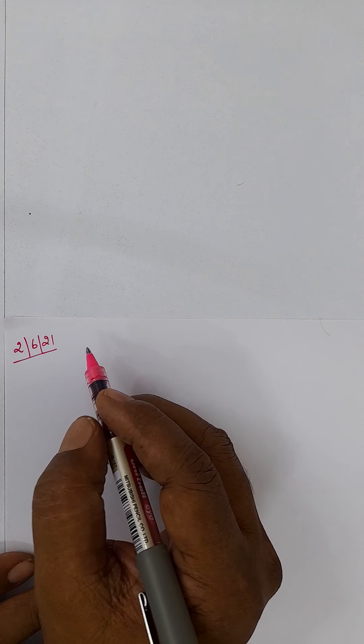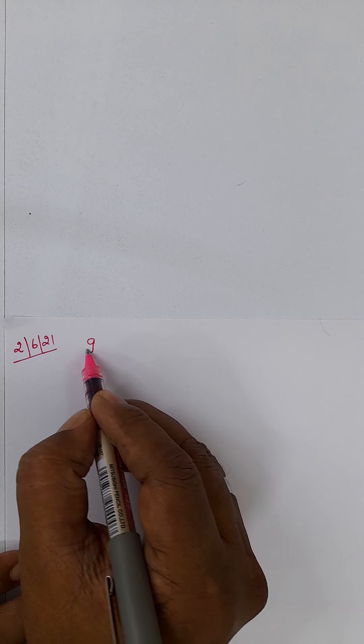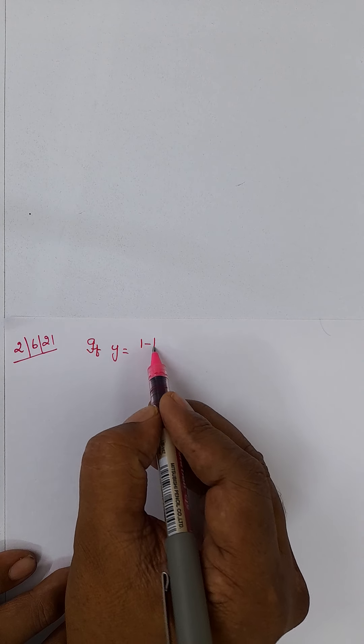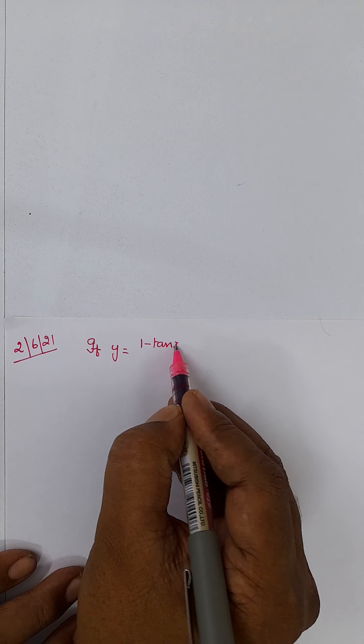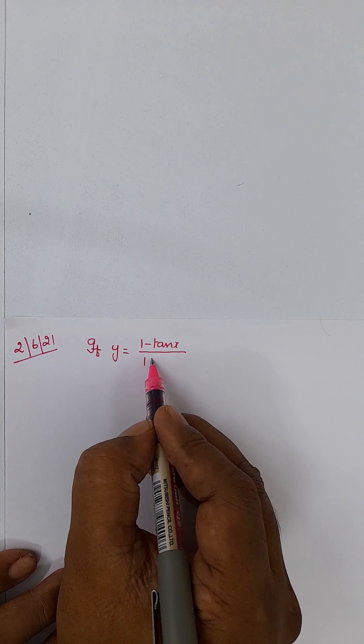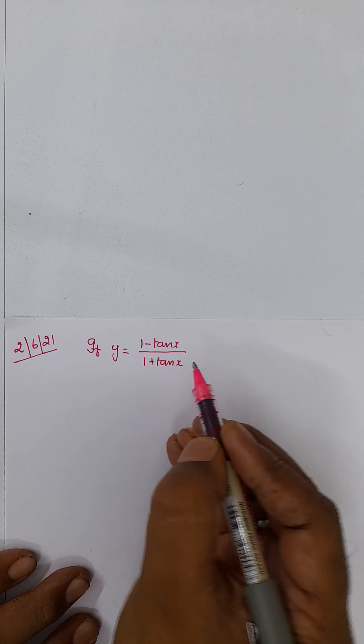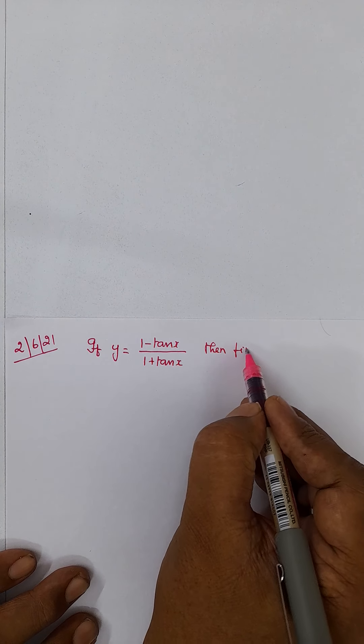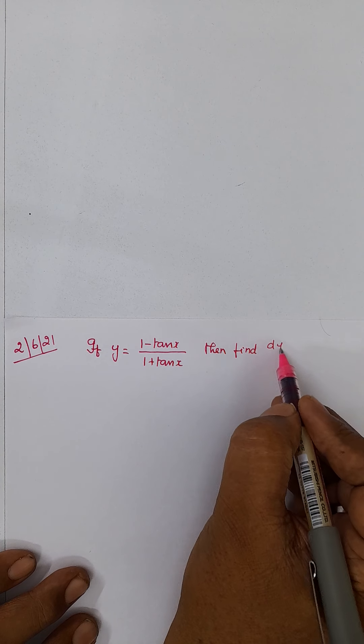The problem is this. If y is equal to 1 minus tan x by 1 plus tan x, then find dy by dx.